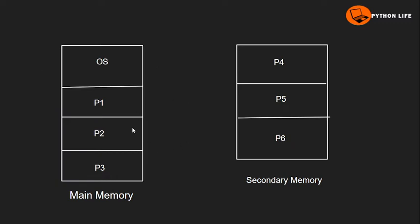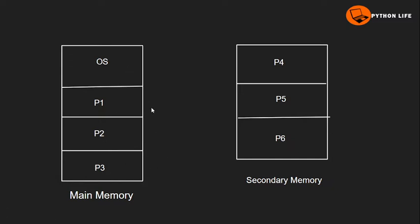Here we will show the main memory and secondary memory. The main memory is divided into two parts: the first part is stored in the operating system, and the second part is stored in the user processes. I will show the user part.